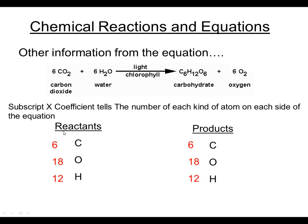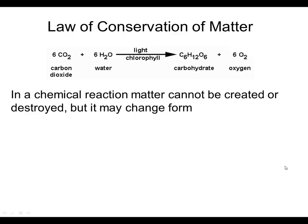What you should notice is that the number of each kind of atom is the same on the reactant side as it is on the product side. That's very important. When those numbers are balanced, we say that the equation follows the law of conservation of matter. The law of conservation of matter states that in a chemical reaction, matter cannot be created or destroyed, but it may change form. So carbon dioxide and water react together—we're not destroying or creating any atoms, but the atoms are rearranged to form the new substance carbohydrate glucose, and some oxygen gas is also produced.